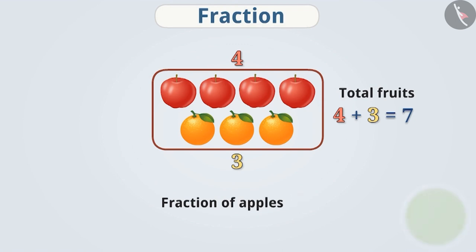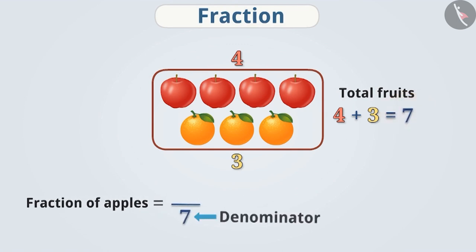Let me explain. Since the total number of fruits is seven, the denominator is seven. And we are considering four apples of them. Therefore, the numerator is four. Thus, the fraction of apples among this group of fruits is four by seven.